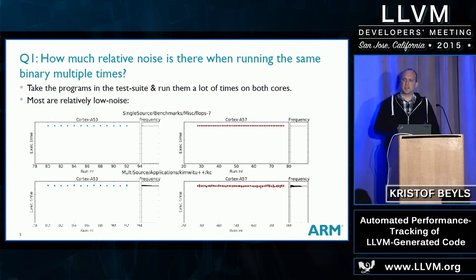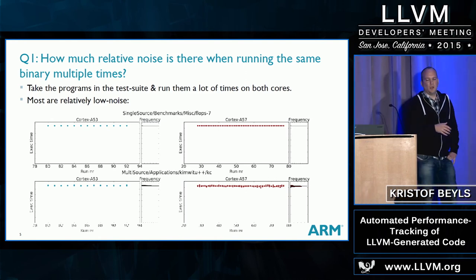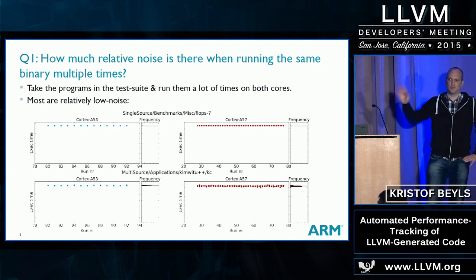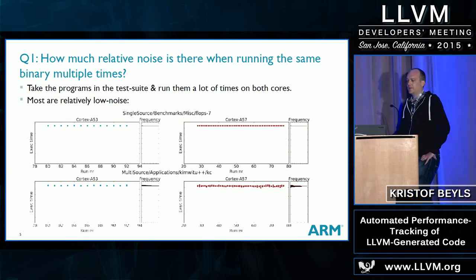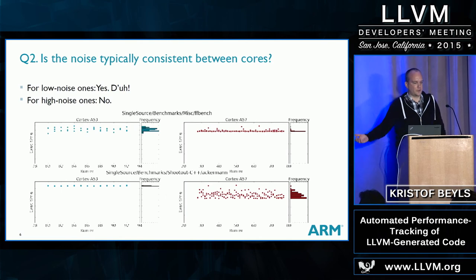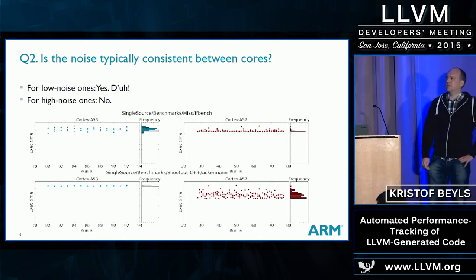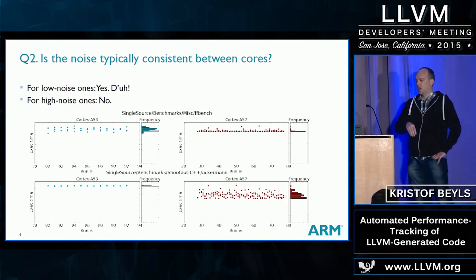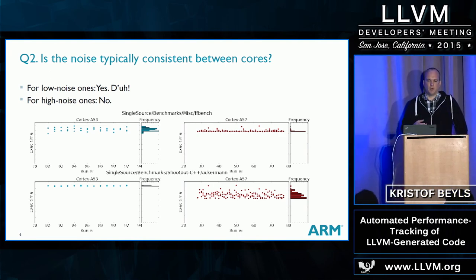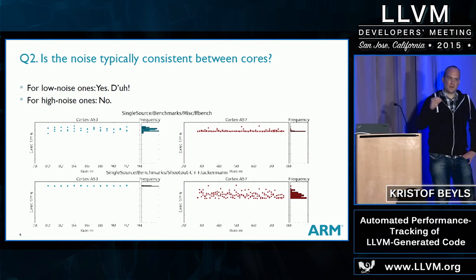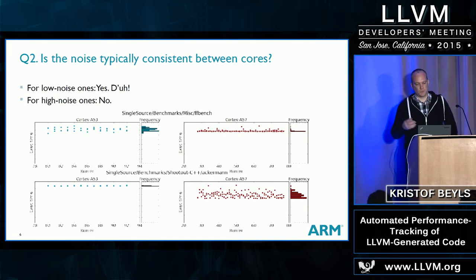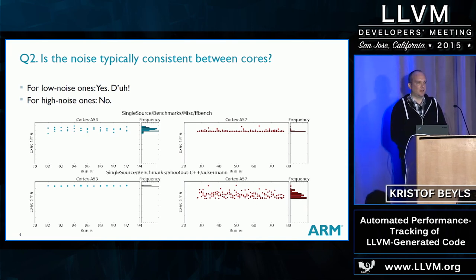Looking at these charts for all 300-plus programs — most of them are low noise, but of course there are exceptions. I asked whether noise is inherent in the program or differs between cores. It turns out a program can be very low noise on one core and very high noise on a little core. Something we could potentially use later to improve our analysis.